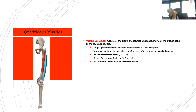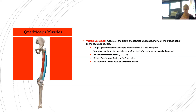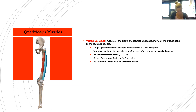The vastus lateralis is the largest and most lateral of the quadriceps muscles in the anterior thigh. Origin: greater trochanter and upper lateral surface of the linea aspera. Insertion: patella via the quadriceps tendon and tibial tuberosity via the patellar ligament. Innervation: femoral nerve L2–L4. Action: extension of the leg at the knee joint. Blood supply: lateral circumflex femoral artery.